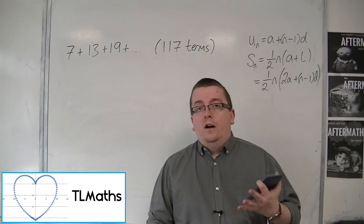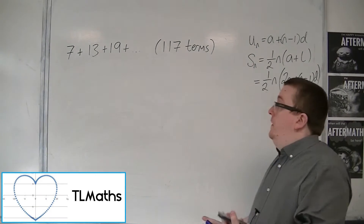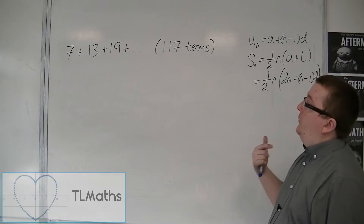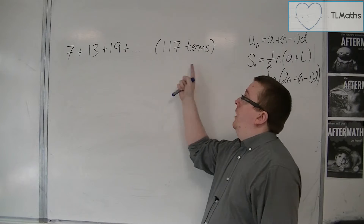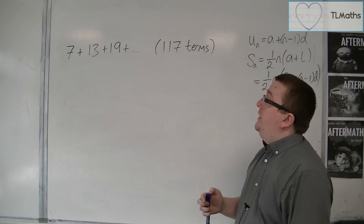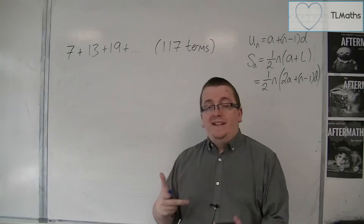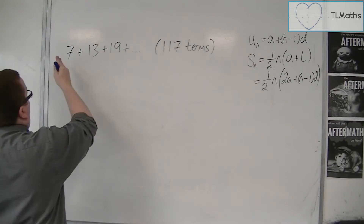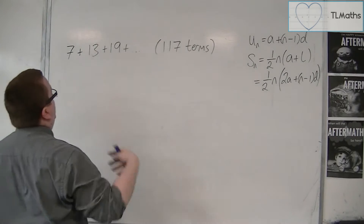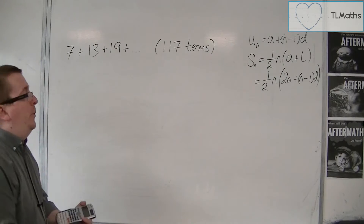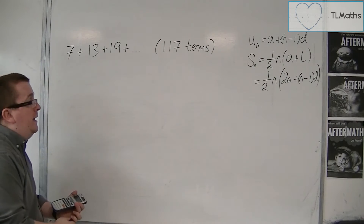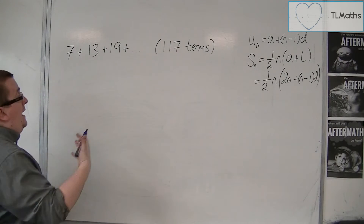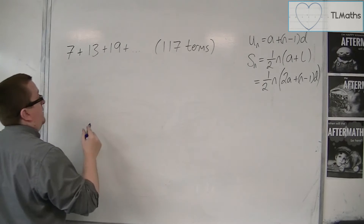This time, I'm not given the last term. I'm just told that there are 117 terms that I need to add up. We're starting at 7, and we're going up in 6s each time. So I know A, and I know D, and I know what N is.